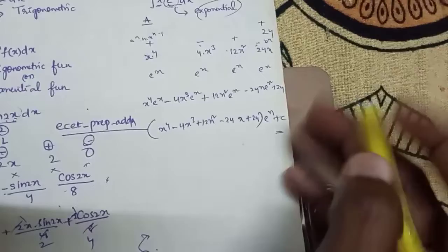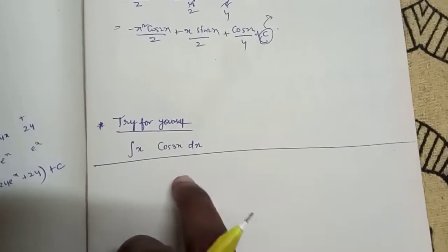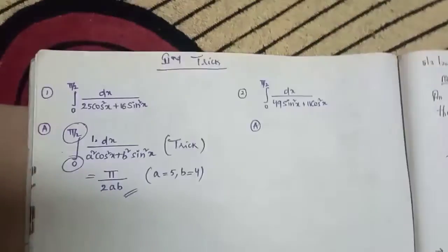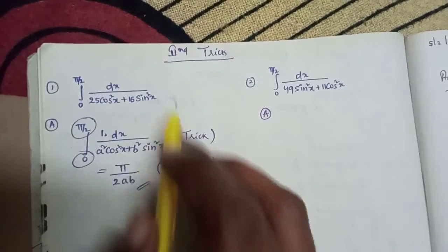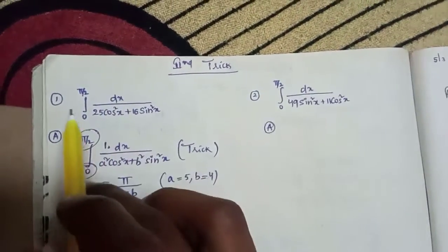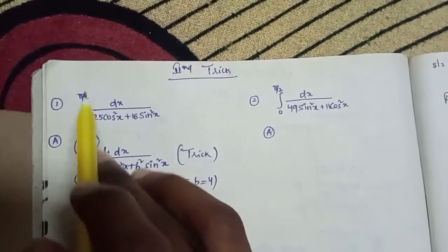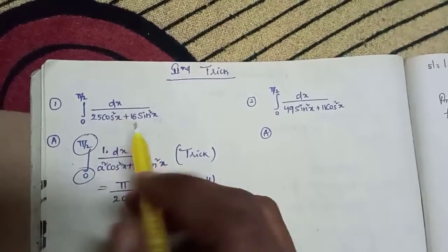So the final answer is: (x⁴ minus 4x³ plus 12x² minus 24x plus 24) e^x plus c. This is the formula. Next trick: choose the definite integral from 0 to π/2.